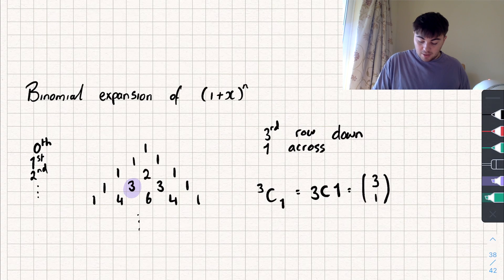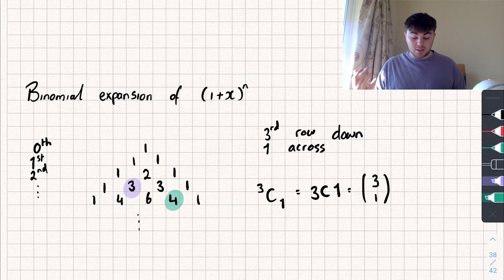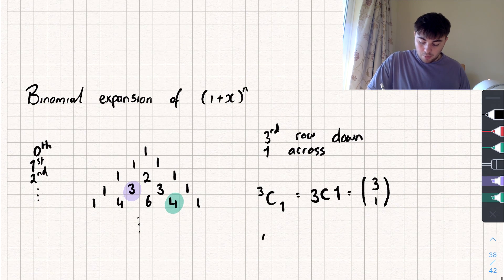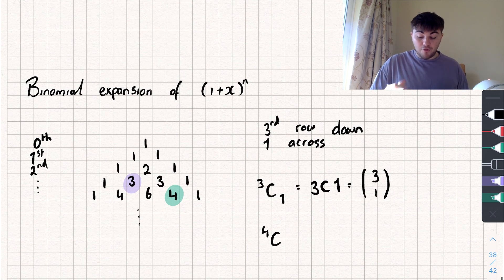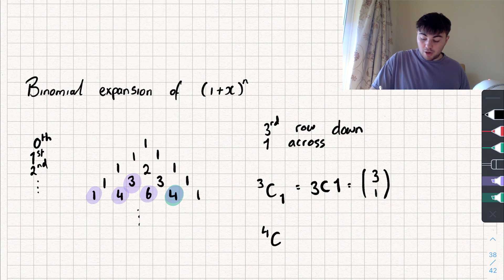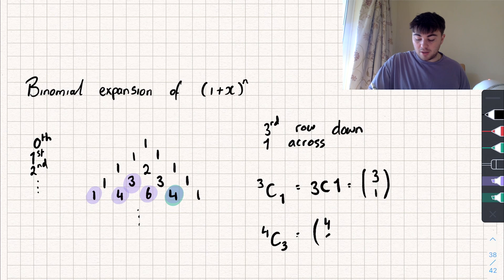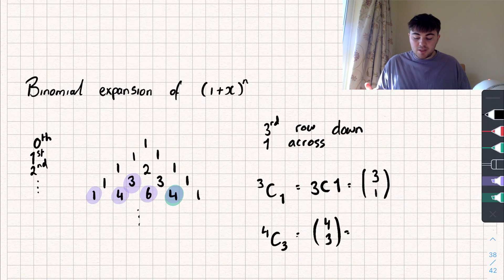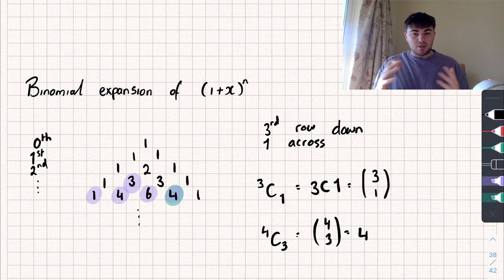As another example, for the number 4 in Pascal's triangle: we go 0, 1, 2, 3, 4 rows down, so it would be 4 choose — and how far across? Starting from 0: 0, 1, 2, 3 — we're going 3 across. So it's 4 choose 3, which I would write in bracket notation as (4, 3). If I do that on my calculator, 4 choose 3, I get an answer of 4. So that is a very brief introduction to Pascal's triangle.